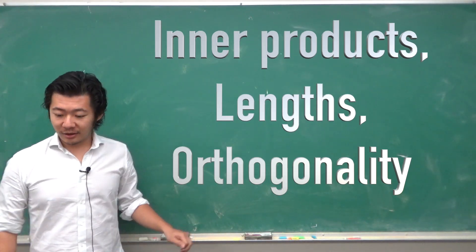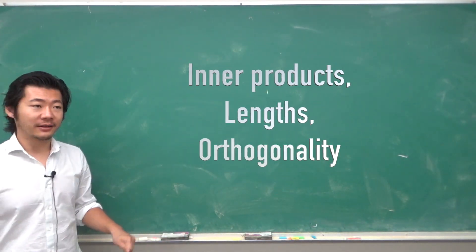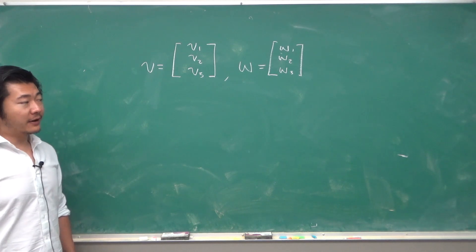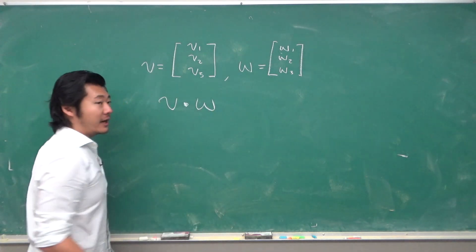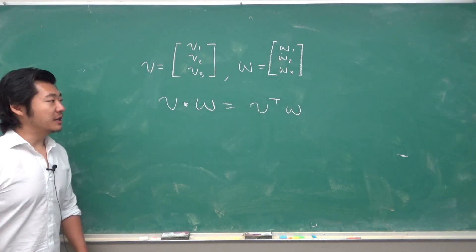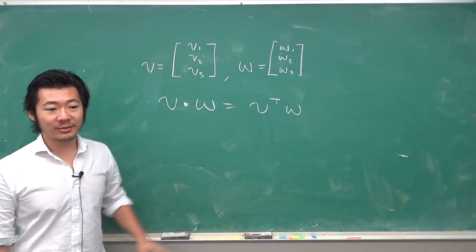In this video, we will talk about inner products, lengths, and orthogonality. So, we define the inner product of two vectors, V times W, as the matrix multiplication V transpose times W.